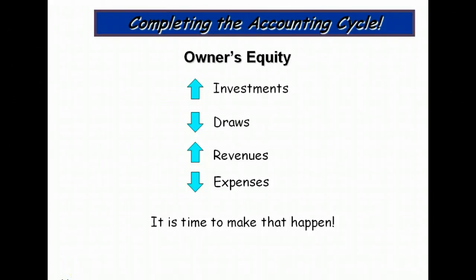Welcome back. Let's have a chat on topics in chapter four. Finally, we get a chance to complete the accounting cycle. For a very long time I have been telling you, owner's equity is more complicated than the other categories of accounts on the balance sheet equation because it has four things that happen to it — it goes up for investments and down for draws and up for revenues and down for expenses.